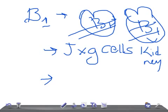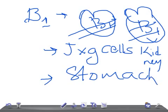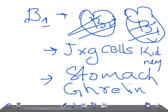Beta-1 receptors are located in the juxtaglomerular cells of the kidney. They are also associated with increased ghrelin secretion from the stomach. So remember: beta-1 receptors are located in the heart (major role), the juxtaglomerular cells of the kidney, and the stomach.